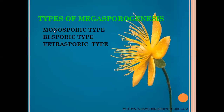During the development of Megasporogenesis from the nucellus of the ovule, only one single cell at the micropylar region acts as a Megaspore mother cell. The Megaspore mother cell participates in meiotic or reduction division to form four haploid megaspores. From those four haploid megaspores, only one megaspore develops into a complete embryosac.